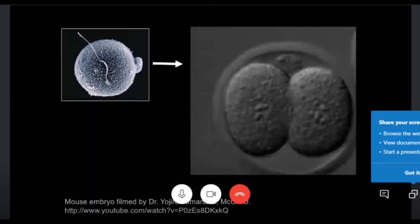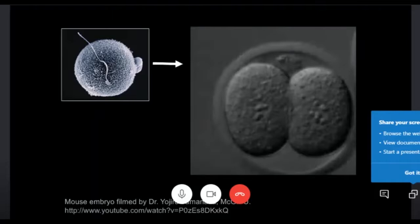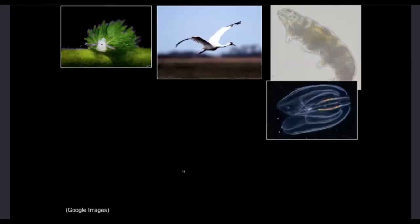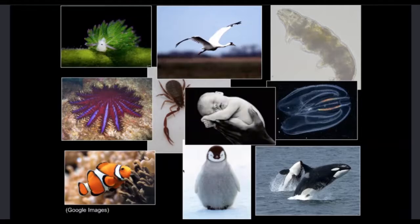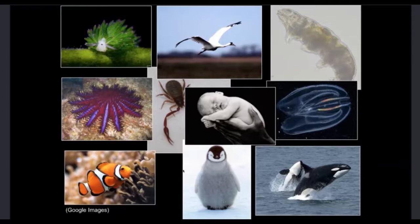This is Rachel again. We actually lost the beginning part of the audio of this lecture, so I'm just going to fill you in a bit. Dr. Tenlin is talking about mitosis, the division of cells, and how cells will multiply rapidly. At the end of that process, the animal is fully formed and has hundreds or thousands or millions of cells that have their own identity and their own purpose.